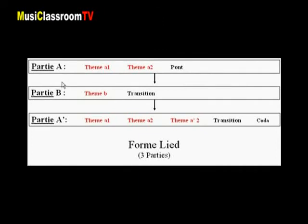La structure d'une pièce musicale apparaît comme un véritable décor dans lequel viendront jouer les principaux acteurs thématiques. La forme et donc la structure de ce second mouvement en dente est en trois parties. La première partie, A, expose le premier thème. Ce premier thème est divisé en deux éléments, A1 et A2.